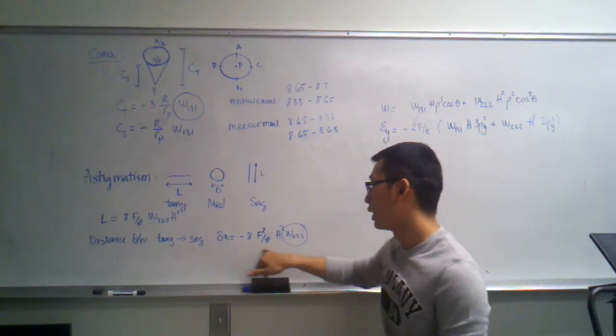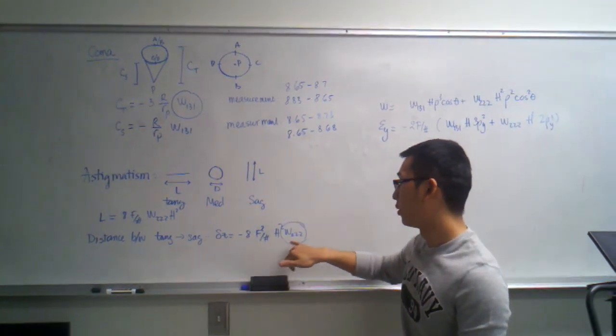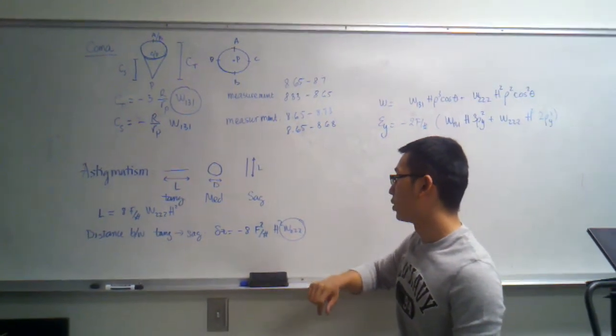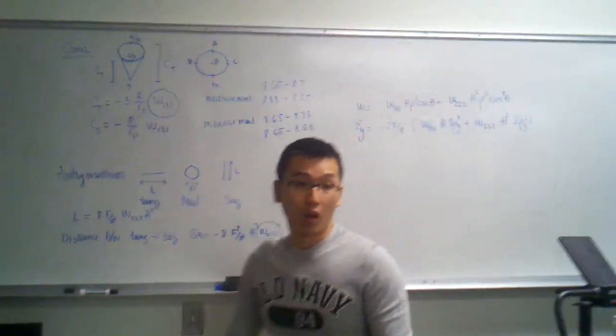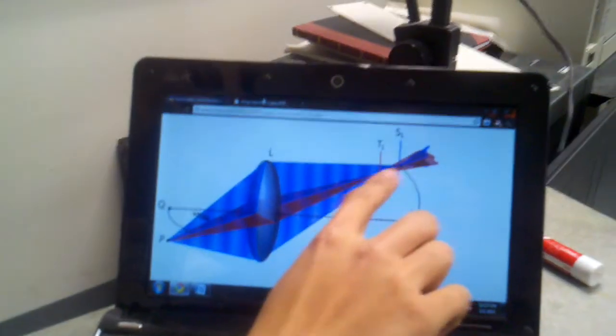I'm sorry, we substitute it in here. It's the change of the focus term. So we can calculate W222. As you look at, as this demonstrates in the picture right here, this distance is the distance we try to measure.